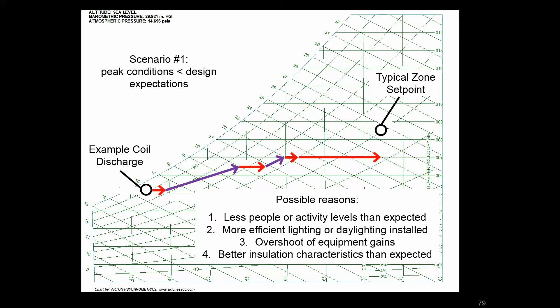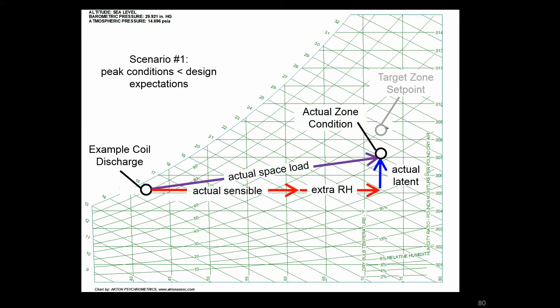Now we're going to look at what happens with some scenarios where loads are differing from their design, and that can happen for a few reasons. In this first scenario where we have peak conditions a little bit less than design expectations, that can be because the expectations weren't accurate, there was too much safety factor, or the assumptions made may have been valid but there's less load from people, from activities, from equipment like lighting or plug loads, or the building could just have better insulative qualities than was expected. But in any case, we have a scenario where we're having less loads and we're seeing quite a bit more reheat than we had before.